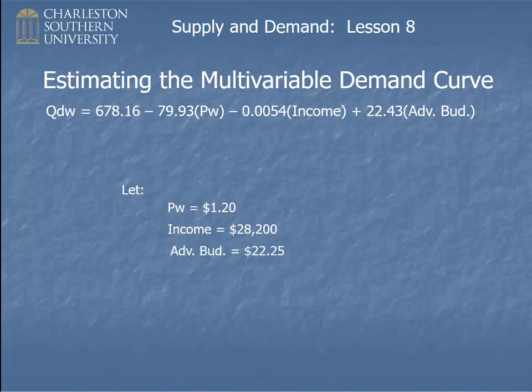This number might seem odd to you, but remember, the units weren't given in this problem. So it could be $22,000 or $220,000 or something. We don't really know. It's just a number that was given to us. In the real world, of course, you would know what that advertising number really means.